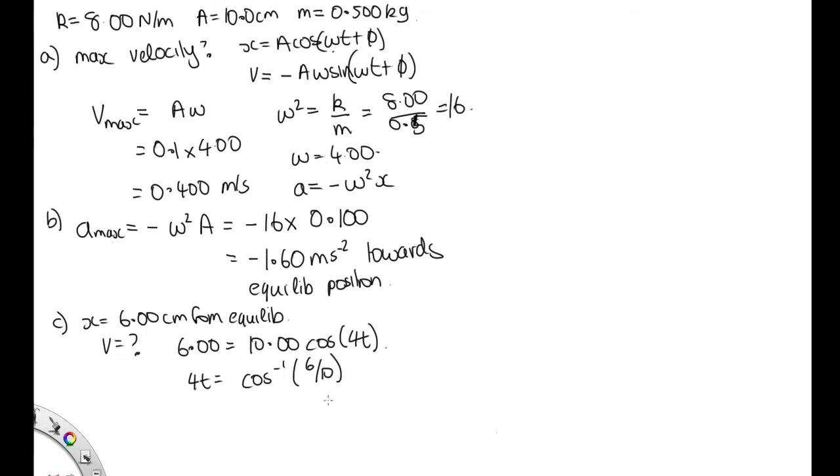It's important to make sure that your calculator is in radians. And so solving that on the calculator, we get 4t is equal to 0.92, and so t is equal to 0.23 seconds.